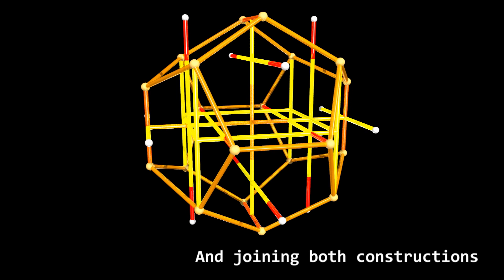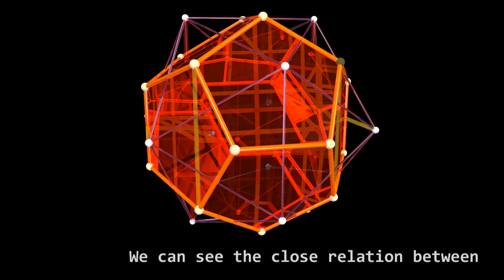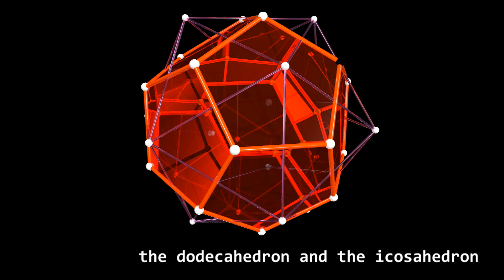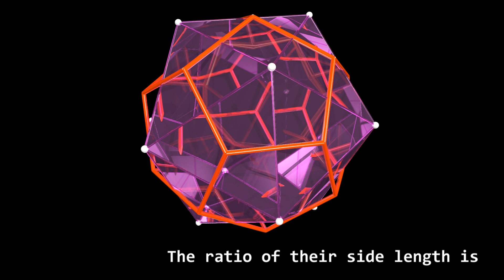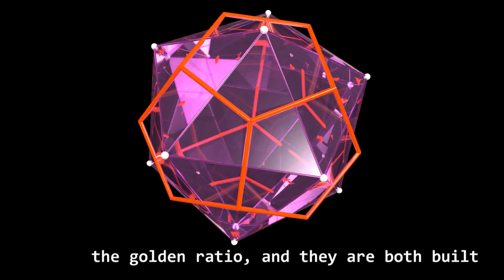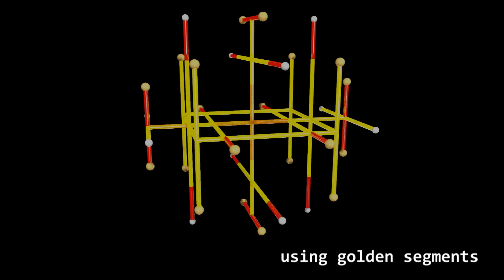And joining both constructions, we can see the close relation between the dodecahedron and the icosahedron. The ratio of their side length is the golden ratio and they are both built using golden segments.